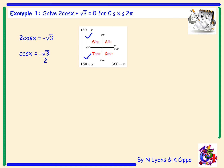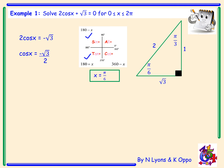√3/2 is an exact value. Drawing our exact value triangle, we're looking for an angle with adjacent √3 and hypotenuse 2, which gives us π/6. To get the angle in the second quadrant it's π − π/6, and to get the angle in the third quadrant it's π + π/6.